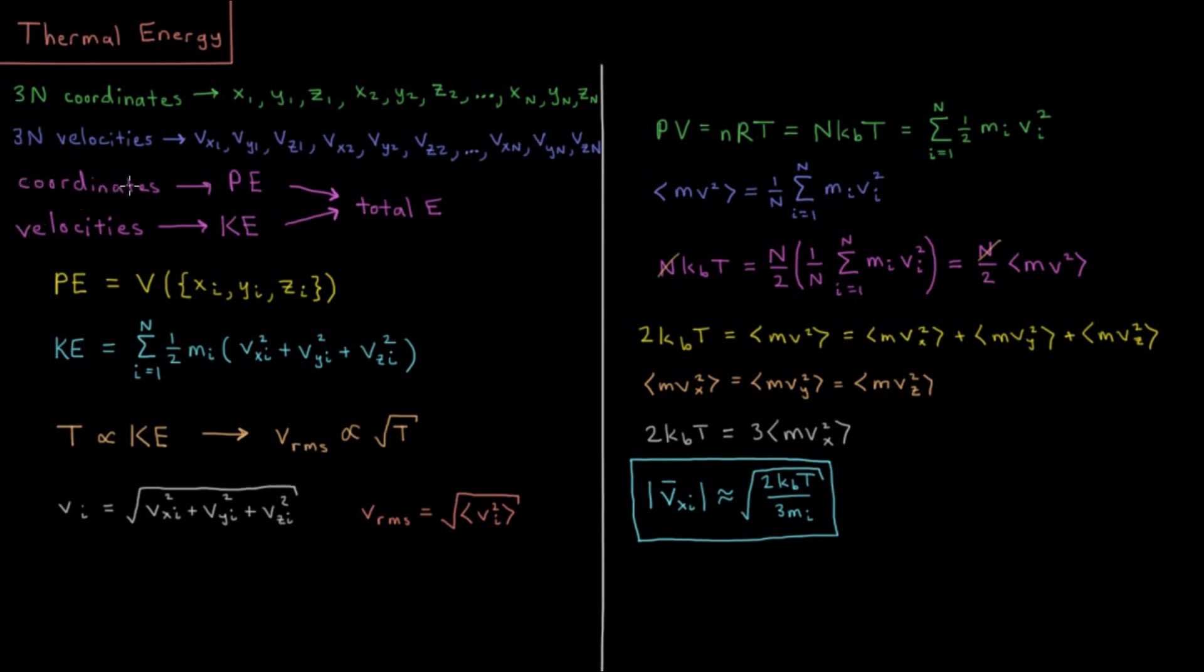Our coordinates determine the things like interatomic distances, bond lengths, bond angles, torsion angles, those determine all the factors that go into our energy function and determine our potential energy. So the position relates to potential energy, and the velocities relate to what we call kinetic energy, the energy of motion. So our total energy is going to be a sum of potential energy and kinetic energy, with potential energy being the energy of position and kinetic energy being the energy of movement.